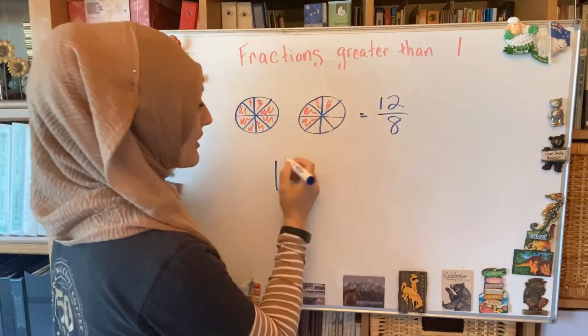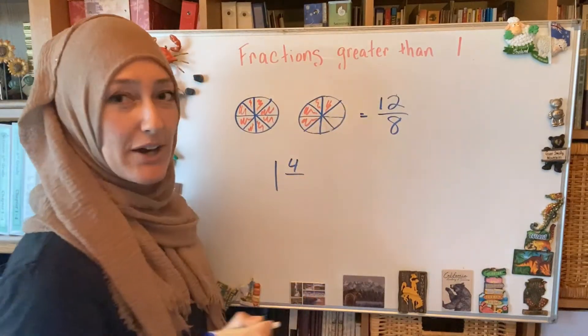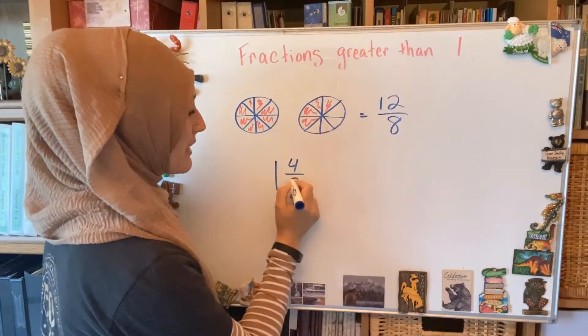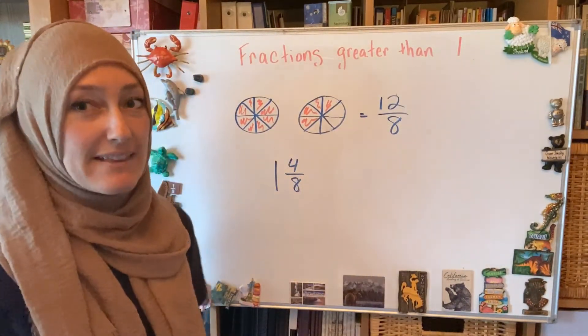And what's my leftover fraction? It's one, two, three, four. Four out of, the denominator is still the size of the piece. So it's one and four-eighths.